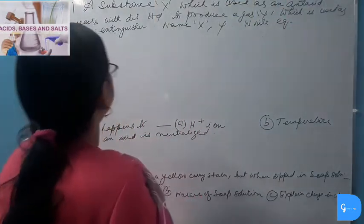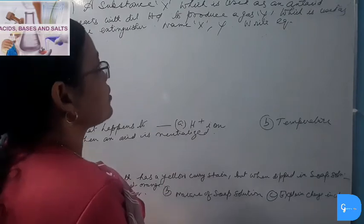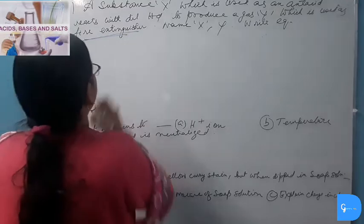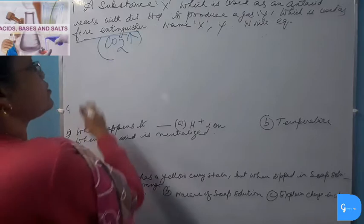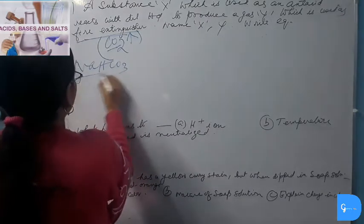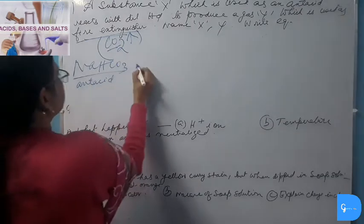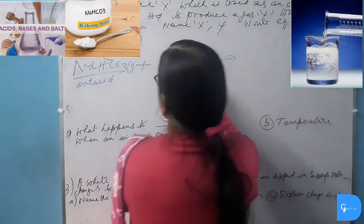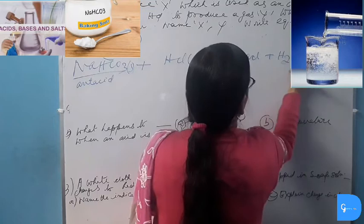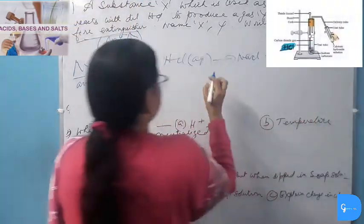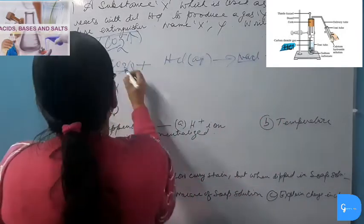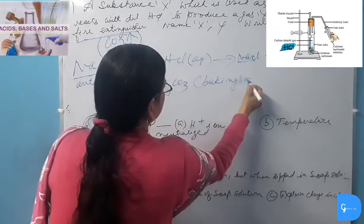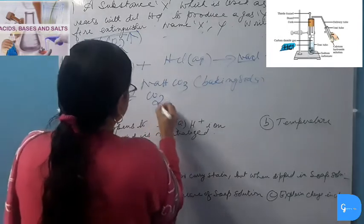A substance X used as an antacid reacts with dilute HCl to produce gas Y, which is used as a fire extinguisher. The gas used for fire extinguishing must be CO₂. So substance X is Baking Soda (Sodium Hydrogen Carbonate, NaHCO₃). NaHCO₃ + HCl → NaCl + H₂O + CO₂↑. Gas Y is Carbon Dioxide.